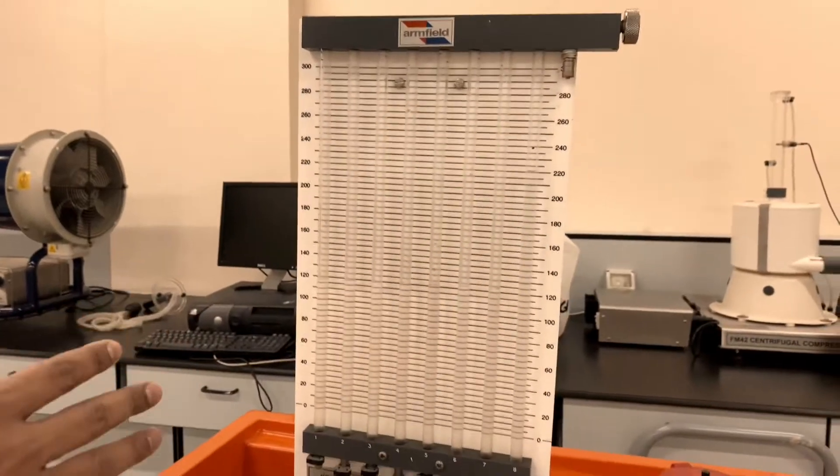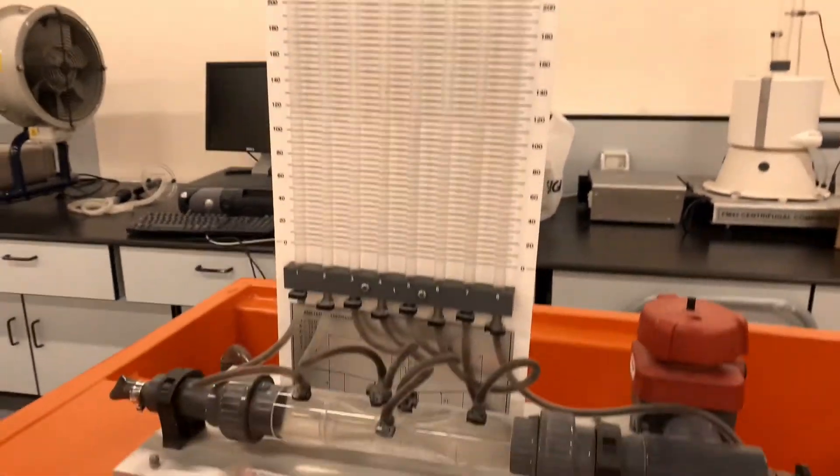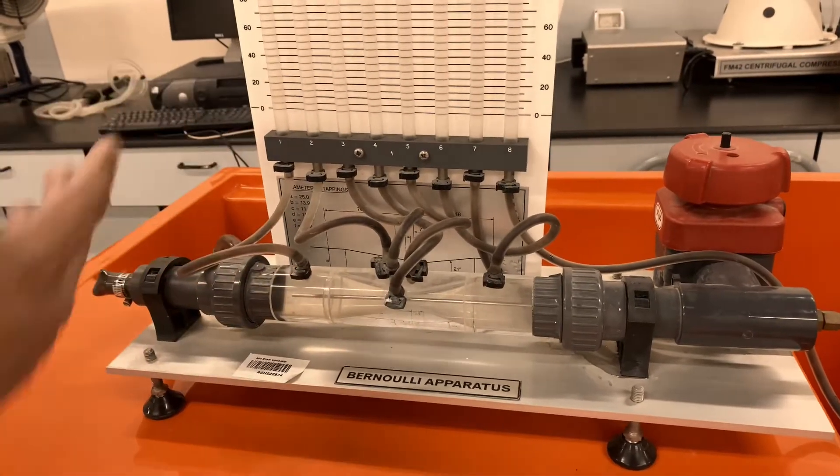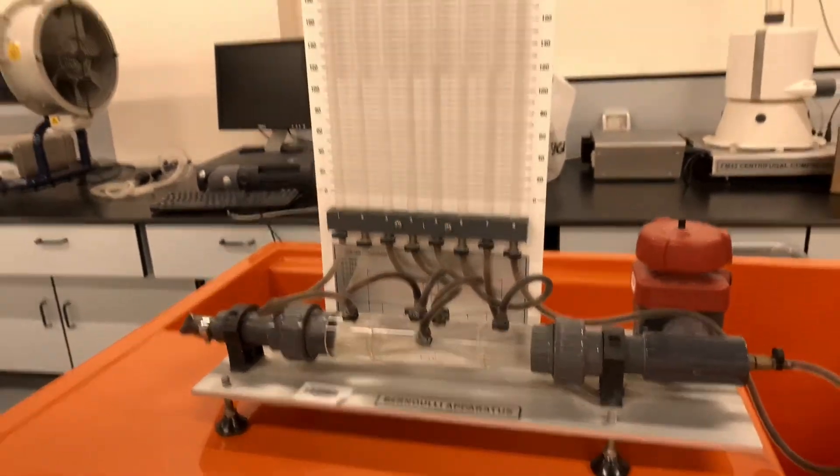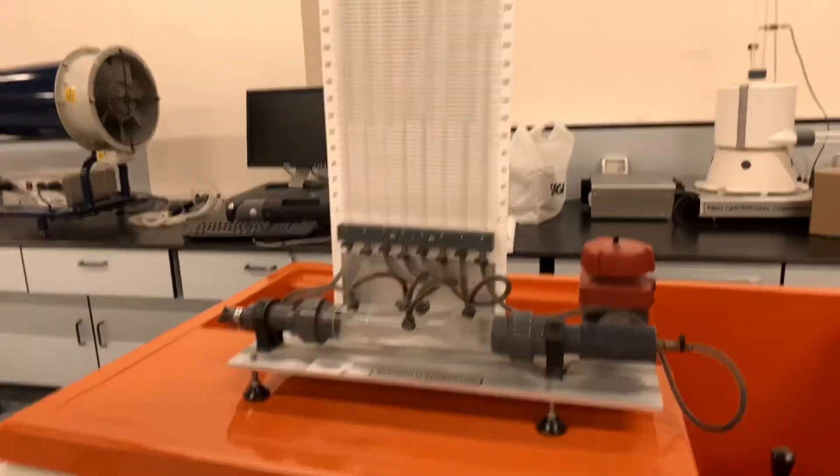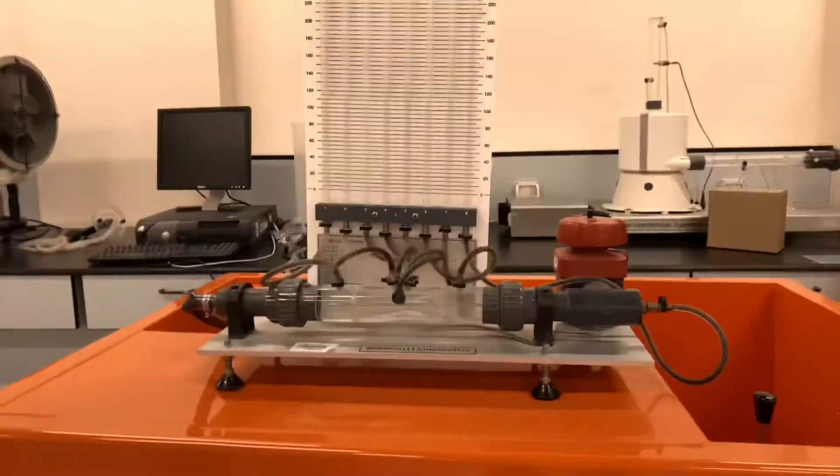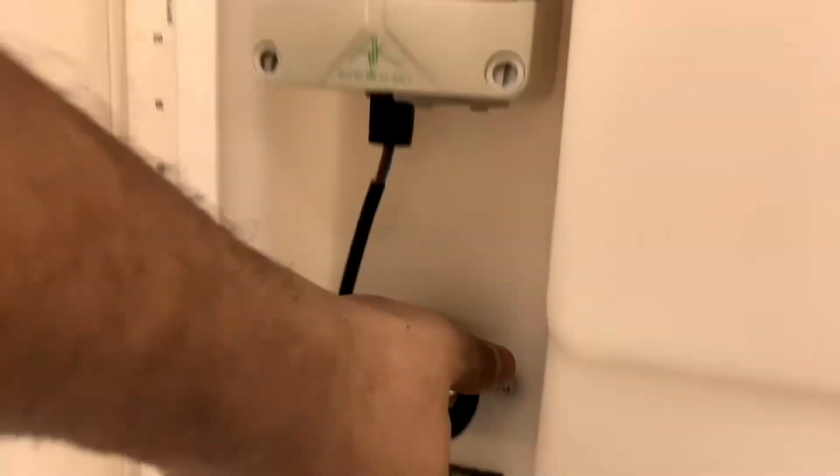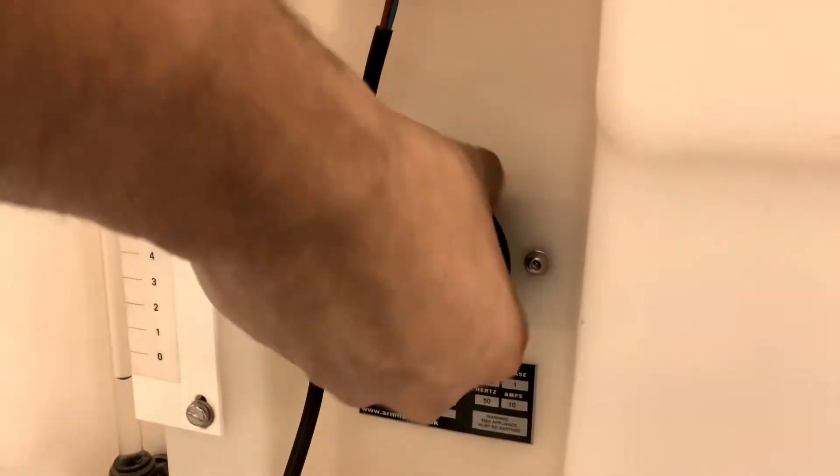We have the table in the theory part that we discussed, and we'll calculate the head values. First of all, let's see how we can get the flow rate value that we are supplying. This is the hydraulic bench. We have to turn it on from here. It's already turned on, and we will start providing a flow rate by rotating this knob.